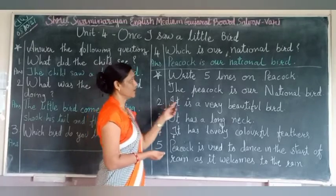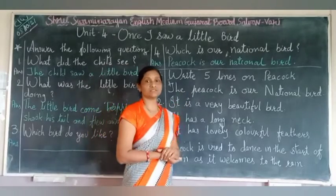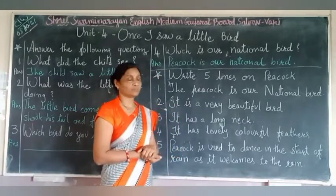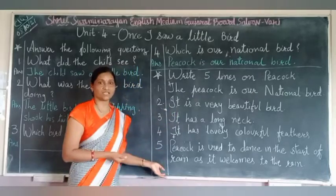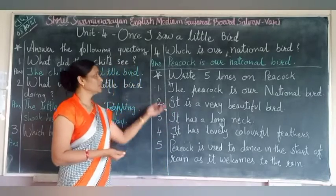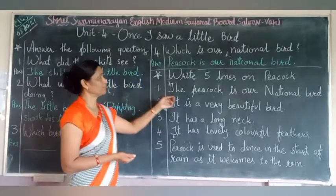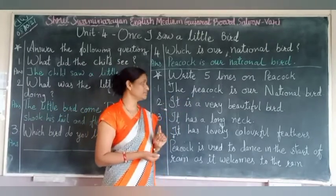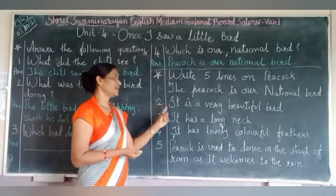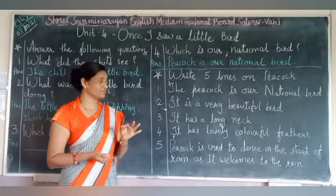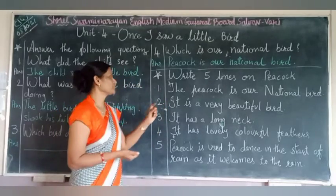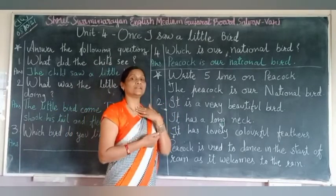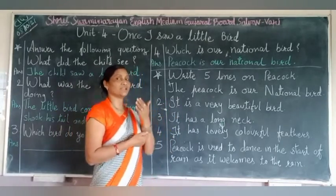Now next one — five lines on peacock. Peacock ke upar five lines. First one: The peacock is our national bird. It is a very beautiful bird. It has a long neck. Uski neck kya se hoorti hai? Long.